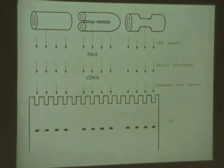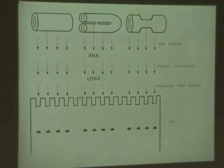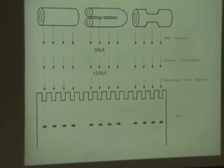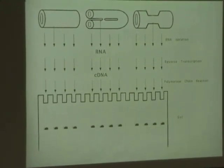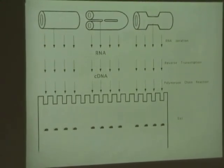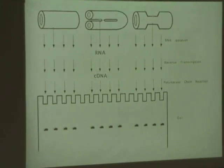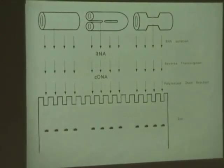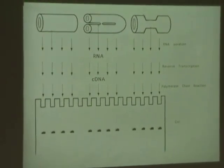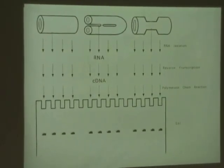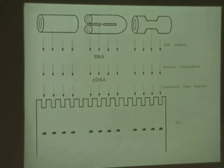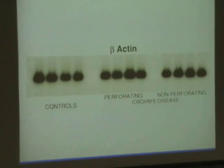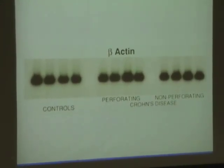So we decided to test the hypothesis that there might be a similar difference in cytokine profiles in the two forms of Crohn's. We took four patients who were controls, four fistulizing Crohn's, and four obstructive Crohn's, isolated the RNA, did cDNAs on it, and then we did a variety of PCRs on them. This is the housekeeping gene beta-actin, and you're really not going to get a better control than that.